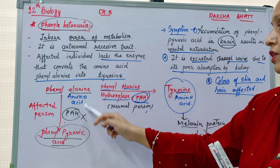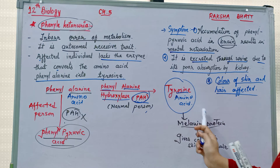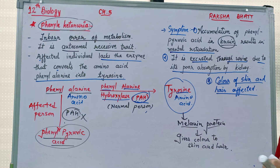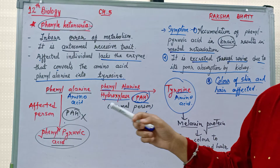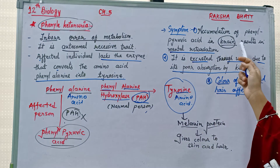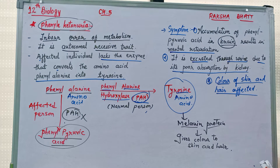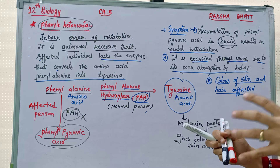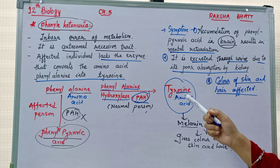Affected individuals do not synthesize the enzyme properly, so melanin is not produced and hair color and skin color get affected. The harmful component phenylpyruvic acid is formed, which accumulates in the brain and causes mental retardation. Second, it is excreted through urine because the kidneys do not properly absorb it.